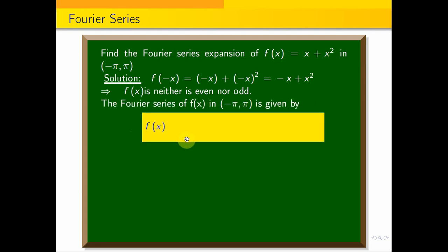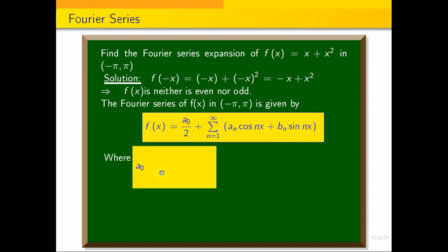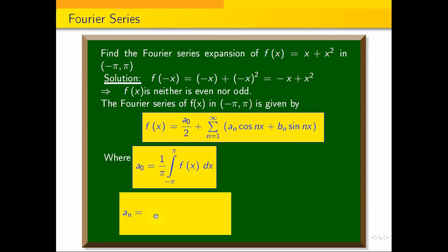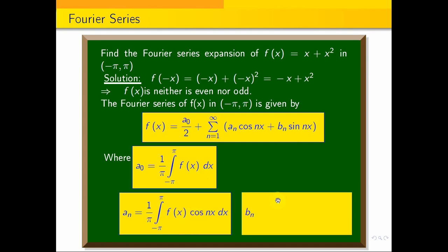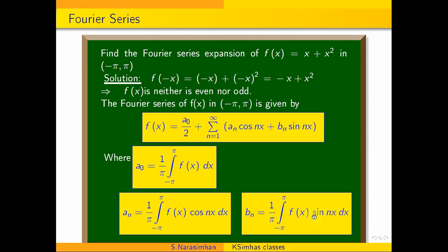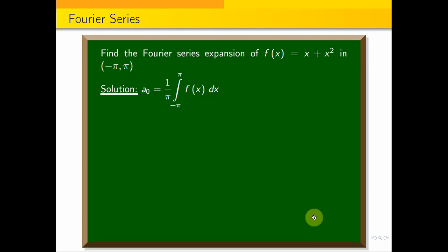f of x is equal to a naught by 2 plus summation n equal to 1 to infinity a_n cos n x plus b_n sin n x. Where a naught is equal to 1 by pi integral minus pi to pi f of x dx, and a_n is equal to 1 by pi integral minus pi to pi f of x cos n x dx. This is the Fourier series formula.